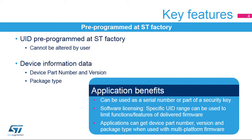The unique identifier or UID and other device information are pre-programmed at the ST factory and cannot be altered by users. This identifier can be used as a security key or serial number, as well as an identifier for software licensing. Multi-platform firmware can use the device information to determine package type and part number for managing application functions and features.